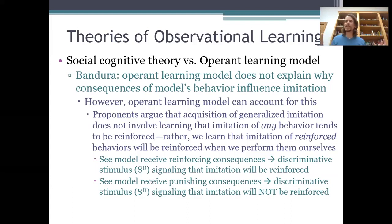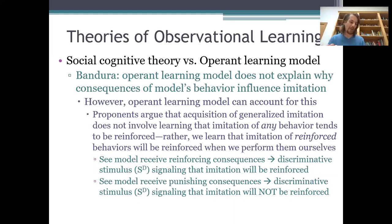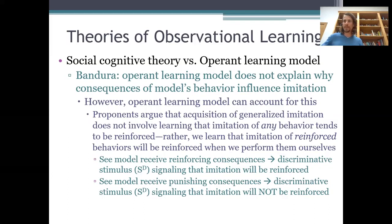With generalized imitation, it's not just that we learn to imitate no matter what. Rather, we learn to imitate reinforced actions and not to imitate punished actions. So the theory can actually account for those vicarious reinforcement and vicarious punishment phenomena that Bandura thought it could not. The concept of generalized imitation isn't actually incompatible with Bandura's findings, so that's not as big a problem for the operant learning model as Bandura thought.